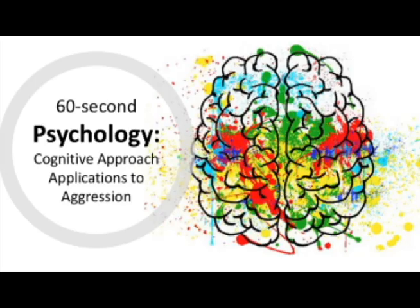There is also relational aggression, which is when the aggressive behavior damages relationships. This doesn't just mean romantic relationships but all types of social relationships like friends and family. This could be hostile, such as sending an angry impulsive text message, or instrumental, such as long-term bullying to damage a person's social status.